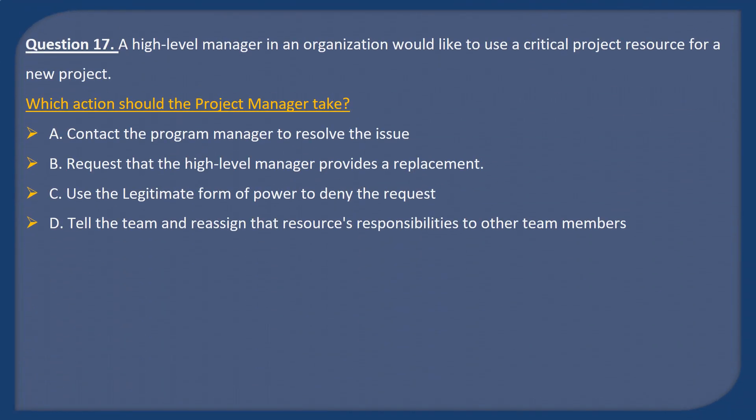Question 17. A high-level manager in an organization would like to use a critical project resource for a new project. Which action should the project manager take? A: Contact the program manager to resolve the issue. B: Request that the high-level manager provide a replacement. C: Use the legitimate form of power to deny the request. D: Tell the team and reassign that resource's responsibilities to other team members.